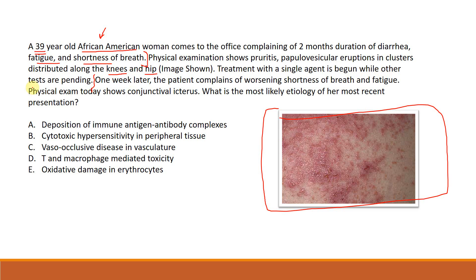The first-line treatment for dermatitis herpetiformis — the rash associated with celiac — is dapsone. Even if you don't know the treatment, let's work with what we have. One week later, the patient returns complaining of worsening shortness of breath and fatigue, and physical exam shows new-onset conjunctival icterus.